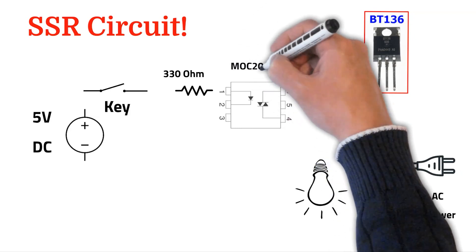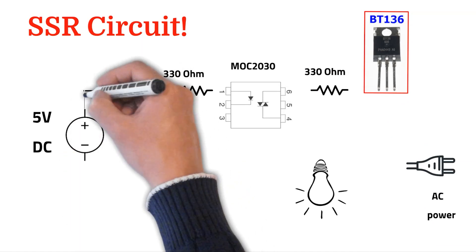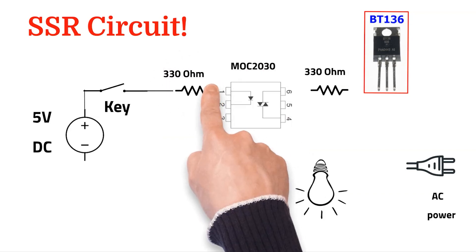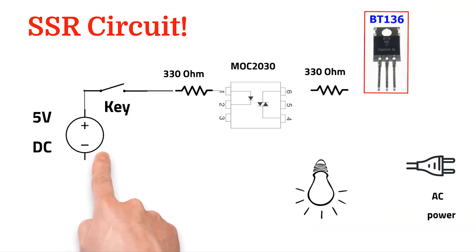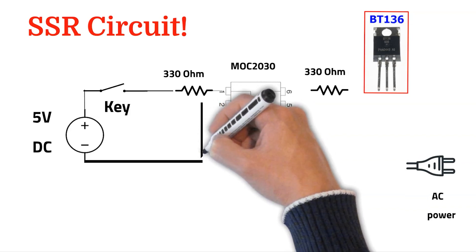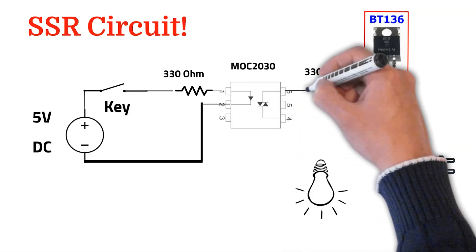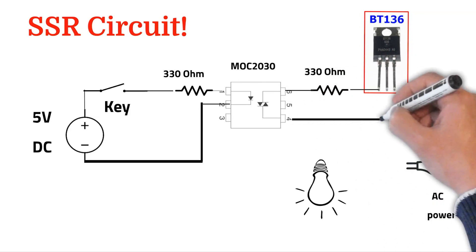The part number of the opto-triac is MOC3020. We connect the positive of the power supply to the anode of the diode and the ground should be connected to the cathode of the LED. Then the A2 of the opto-triac, after passing the resistor, is connected to the A2 of the triac.